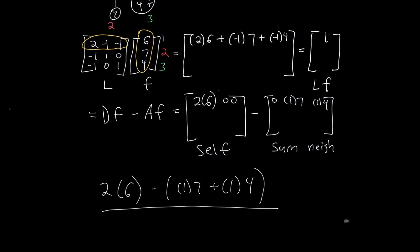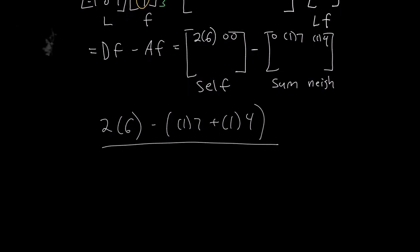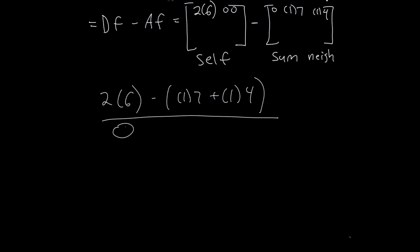If we describe what this math represents, we see that in the first term, it's multiplying the value of a node with its own degree, and in the second term, it's subtracting the sum of its neighbor's values.